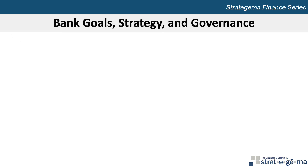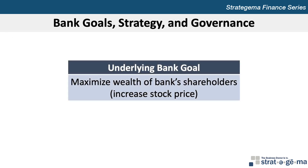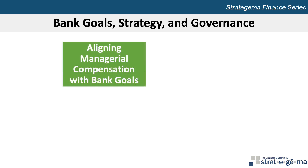Let's begin by discussing bank goals, strategy and governance. The underlying goal of the managerial policies of a bank is to maximize the wealth of the bank's shareholders. To achieve this goal, bank managers should make decisions that maximize the price of the bank's stock. To ensure that managers serve shareholder interests, banks commonly implement compensation programs and provide bonuses to high-level managers whose actions satisfy the bank's goals.